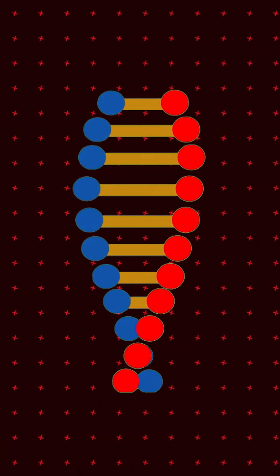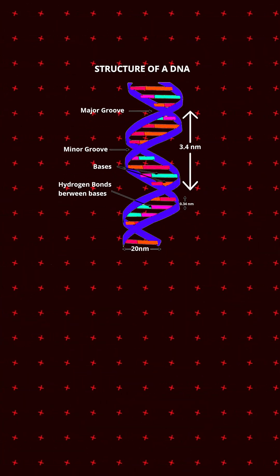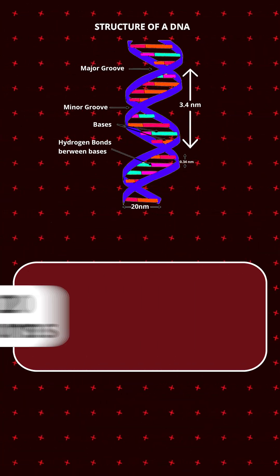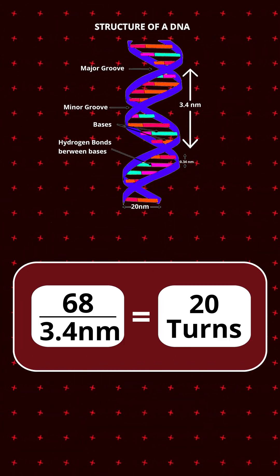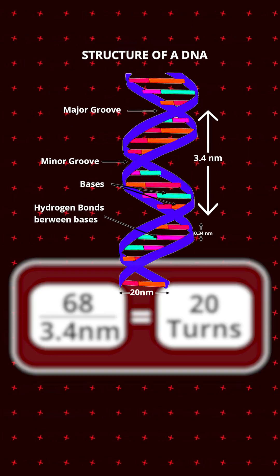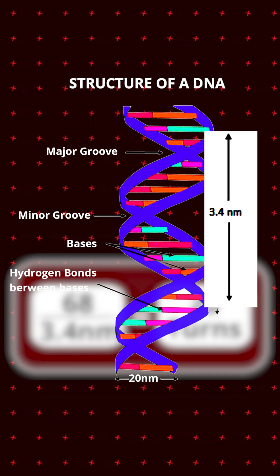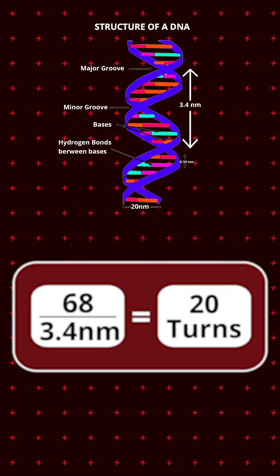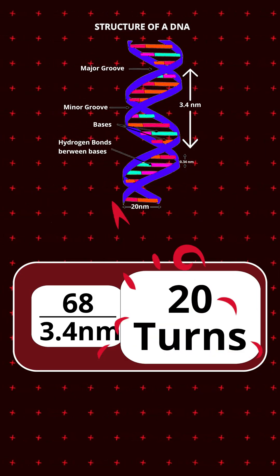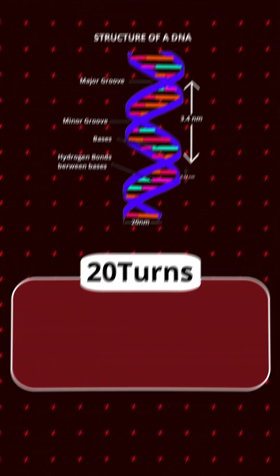Look at the length of DNA — 68 nanometers. 68 nanometers divided by 3.4, since 1 turn length is 3.4 nanometers, so we will get a total of 20 turns.